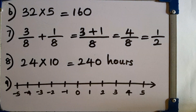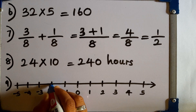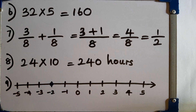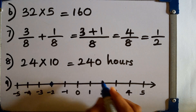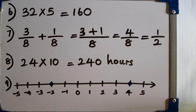Question number 9: mark the numbers minus 2 and 4 on the number line given below. Minus 2 and 4. We can mark the numbers by using a small dot like this. This is the way we are marking the numbers on the number line.